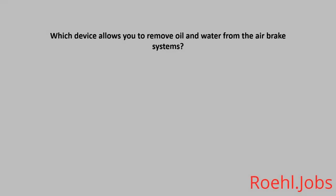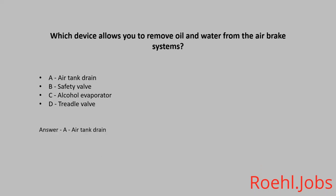Which device allows you to remove oil and water from the air brake systems? A. Air tank drain. B. Safety valve. C. Alcohol evaporator. D. Treato valve. The answer: A, air tank drain.